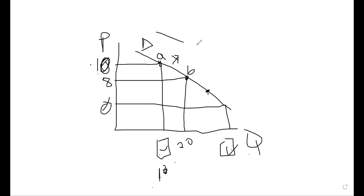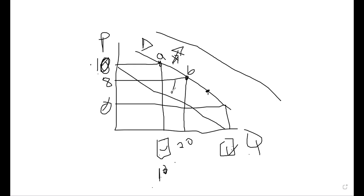There is another concept called shifting, where the demand curve shifts bodily. A shift outward is called an increase in demand; a shift inward to the left is called a decrease in demand. Moving from point B to point C on the same curve is called movement along the demand curve. You must know the difference between shifting the demand curve and moving along it.